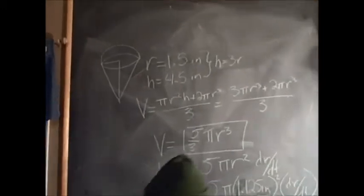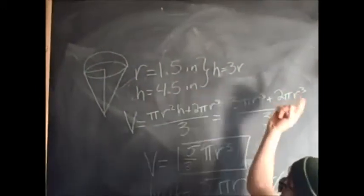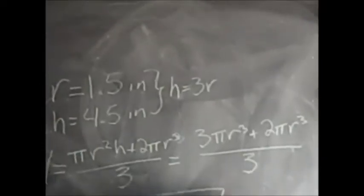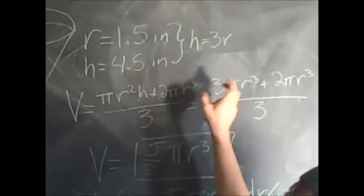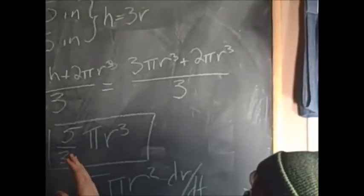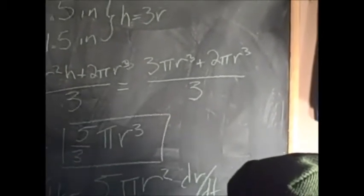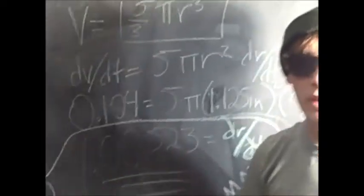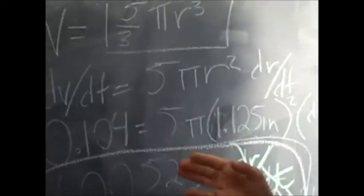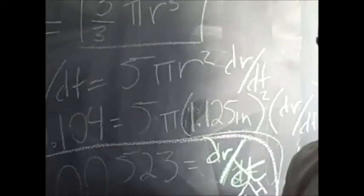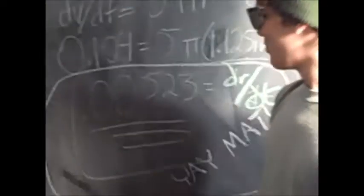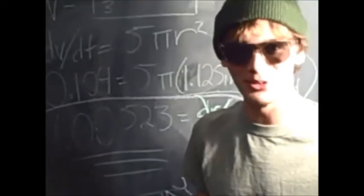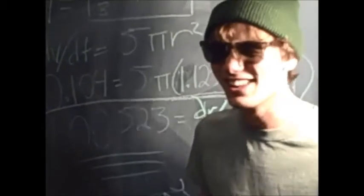The radius originally was 1.5 inches, the height was 4.5 inches, so we took the height in terms of r so that we could only use one variable — so 3r. We changed the original volume equation, which is the volume of a cone plus the volume of a hemisphere, so that all became 5/3 π r³. We took the derivative of that and then actually calculated what the change in volume was, which was 0.104 cubic inches per second. And we solved for dr/dt and got 0.00523 inches per second.